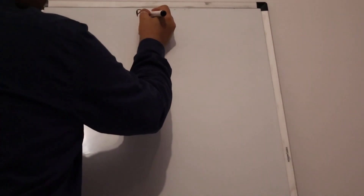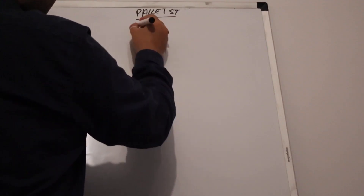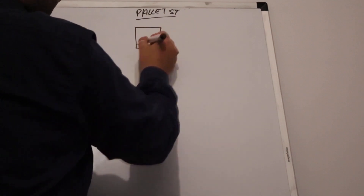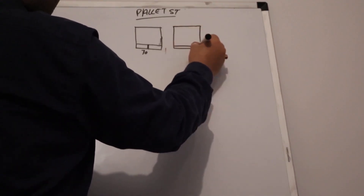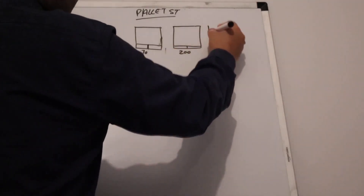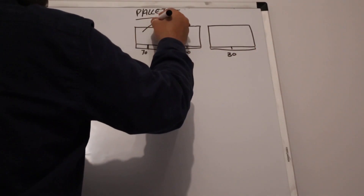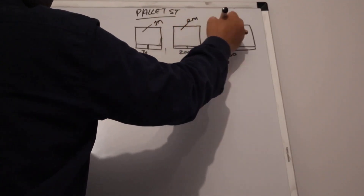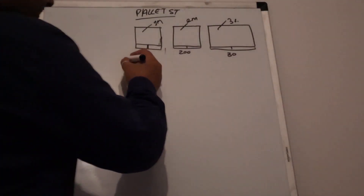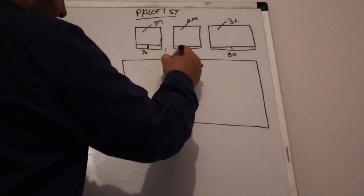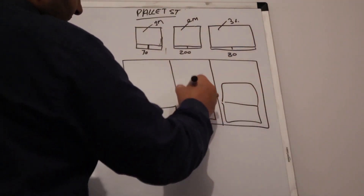When we use the pallet storage type, we have different sizes of complete full HUs. Suppose I have 70 quantities of one-meter handling units, 200 quantities of two-meter handling units, and 30 quantities of three-meter handling units. How do we manage all these in our warehouse? We create the storage type and divide the bins into different sections where we put these handling units.